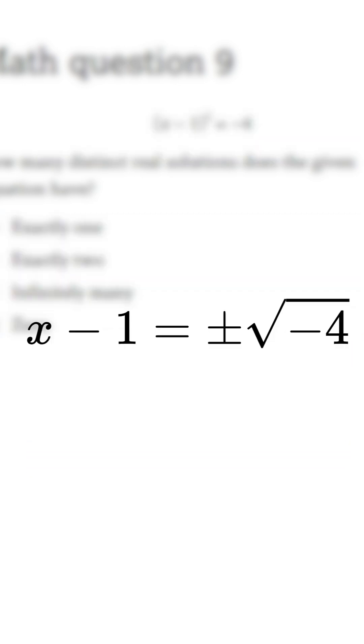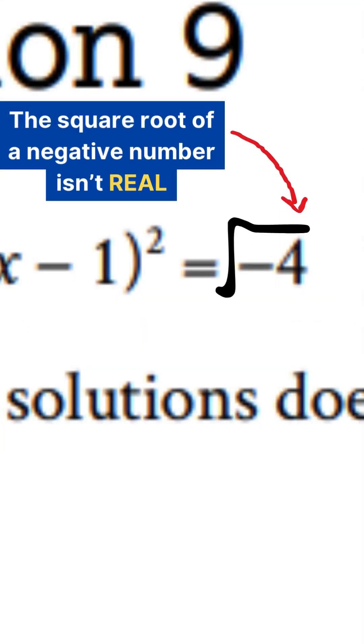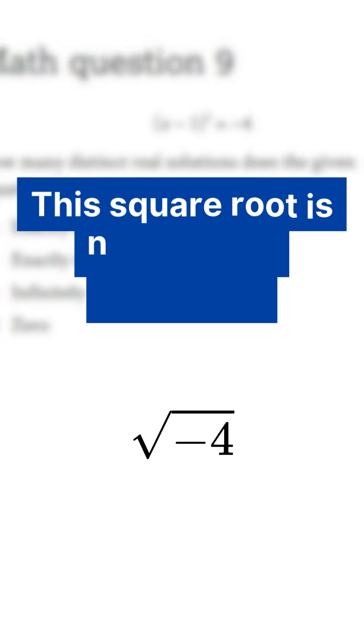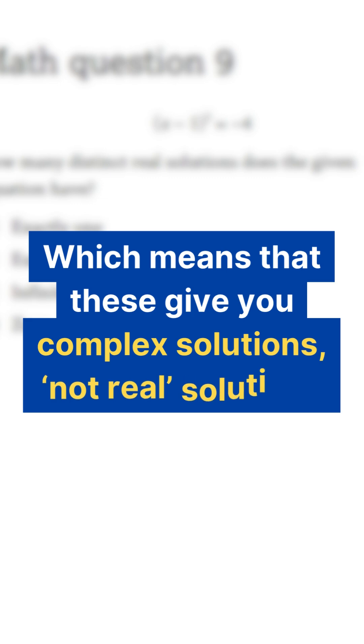But here's where things get interesting. The square root of a negative number isn't real. The square root of -4 doesn't exist in the set of real numbers. It's imaginary, which means that these give you complex solutions, not real solutions.